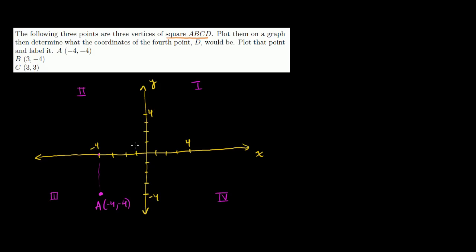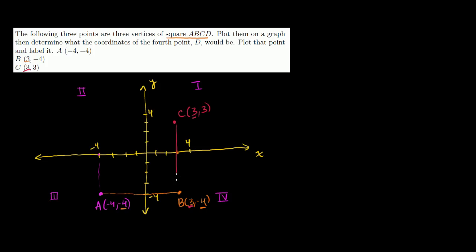If both coordinates are negative, the point is in the third quadrant. If only y is negative but x is positive, you're in the fourth. If both are positive, you're in the first. If y is positive but x is negative, you're in the second. Point B is at 3, negative 4 — x positive, y negative — so it's in the fourth quadrant, right there. Point C is at 3, 3 — both positive, so it's in the first quadrant, right above B on the same vertical since both have x equal to 3.